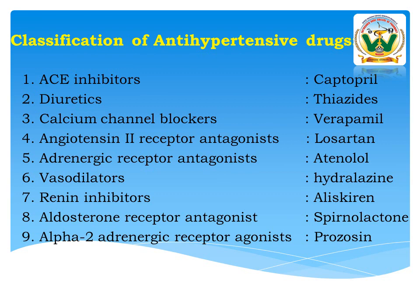Now let us go to the classification of antihypertensive drugs. Different types of drugs are available for treatment of hypertension. First, ACE inhibitors — example, Captopril. Diuretics — example, Thiazides. Calcium channel blockers — example, Verapamil. Angiotensin second receptor antagonists. Adrenergic receptor antagonists — example, Atenolol. Vasodilators — example, Hydralazine. Renin inhibitors — example, Aliskiren. Aldosterone receptor antagonists — example, Spironolactone. Alpha-2 adrenergic receptor agonists — example, Prazosin.